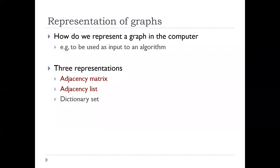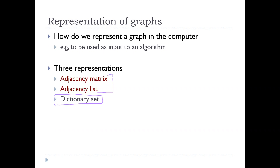The first two — the adjacency matrix and adjacency list representation of graphs — are the more classical and standard way to represent graphs, which you'd see in typical textbooks. The last one can be thought of as a more efficient, practical implementation of the adjacency list. Some software packages have used this to represent graphs.